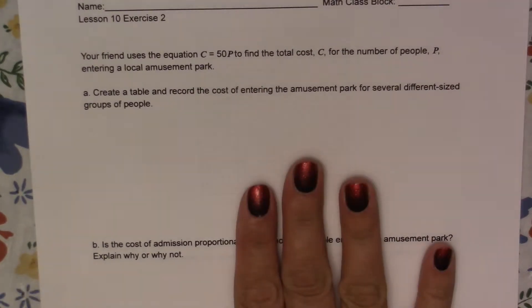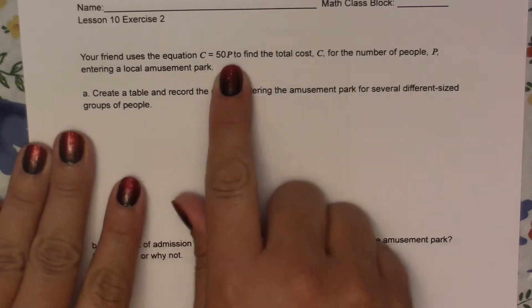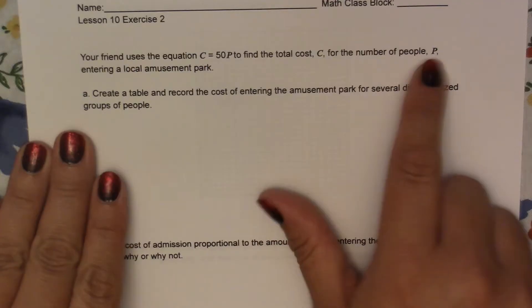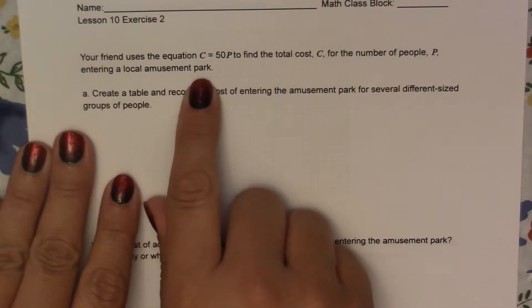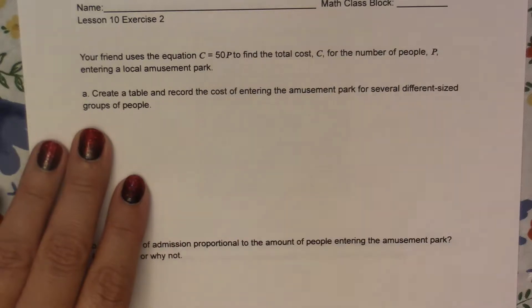Alright, so let's work through this. It says your friend uses the equation C equals 50P to find the total cost C for the number of people P entering a local amusement park. So to find our total cost, we're going to take 50 times however many people decide to go to the park.